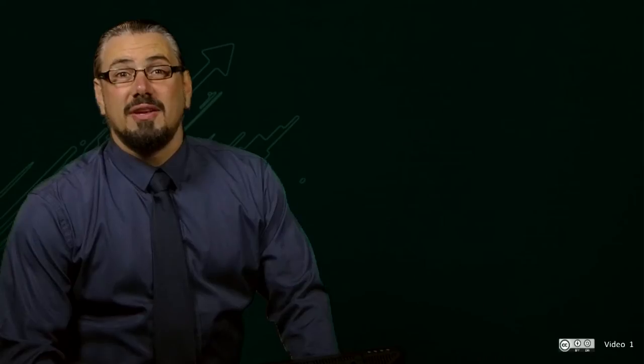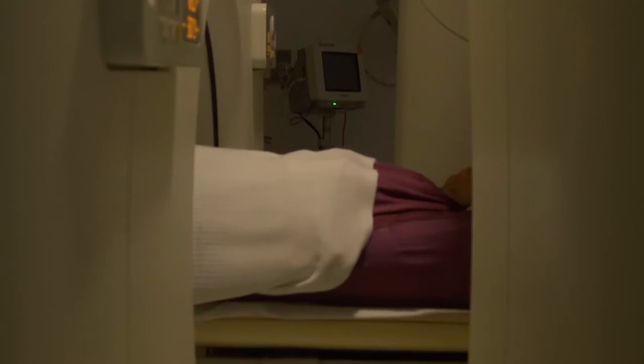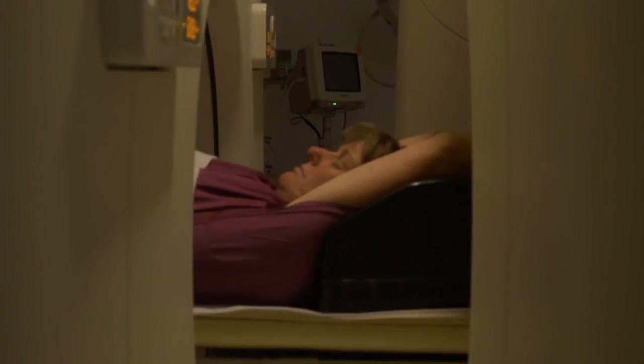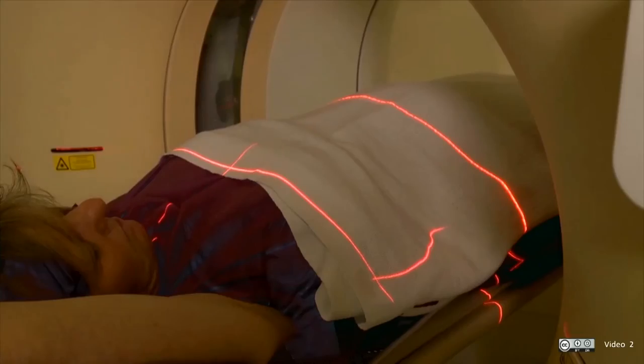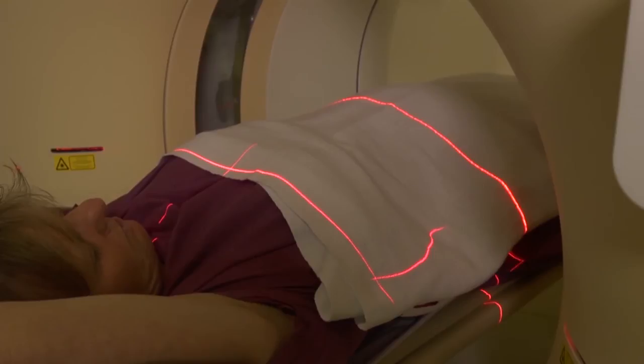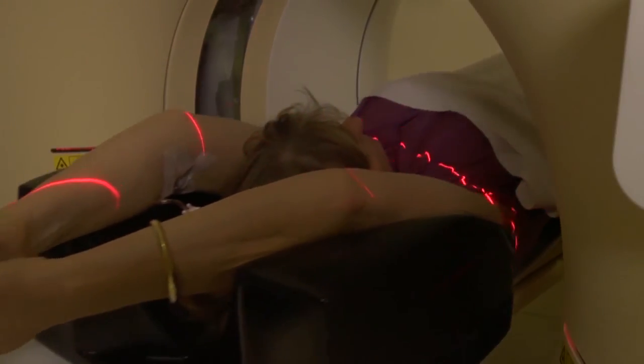The patient is then transferred onto the bed of the PET CT scanner. This bed is then moved into the gantry of the scanner so that the patient can be positioned correctly for the scan. The red beams of light that you see are to assist with the positioning of the patient.